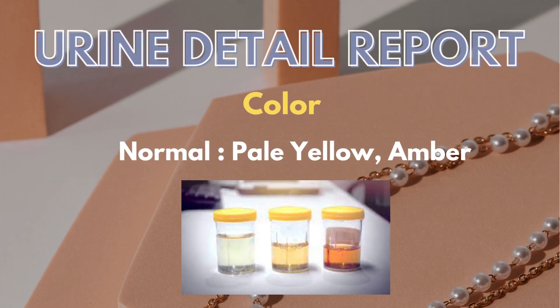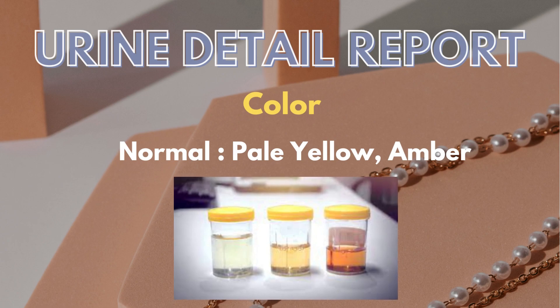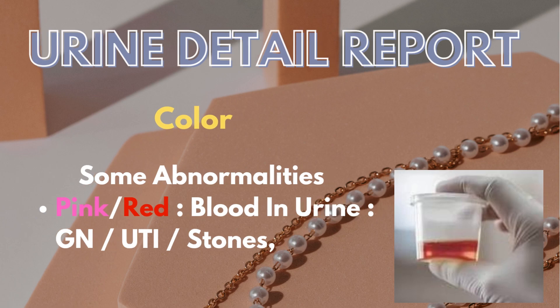We begin with color. Normal color of the urine is pale yellow or amber. But some abnormalities may cause urine color to change. Pink or red color indicates blood in urine, which could be due to glomerulonephritis, UTI, or stones.